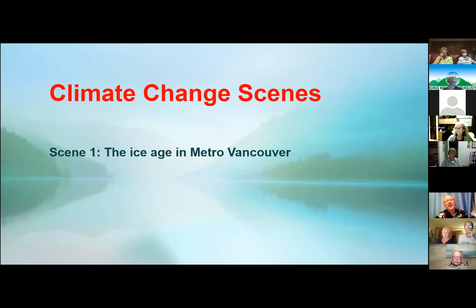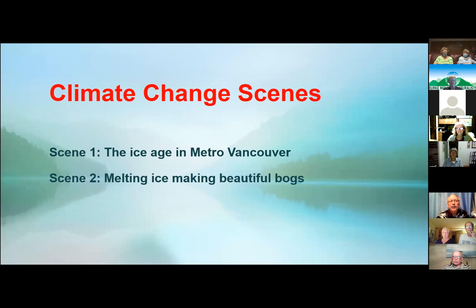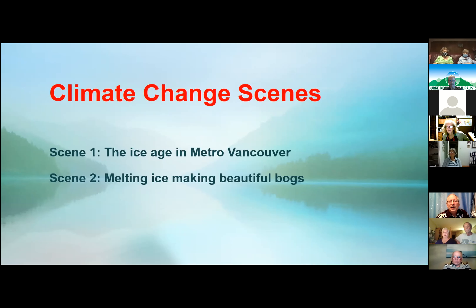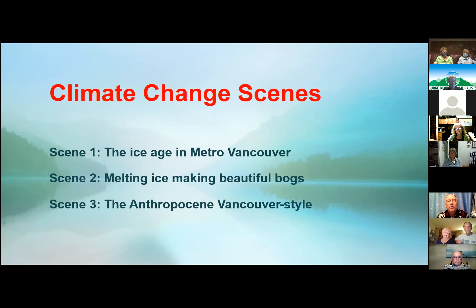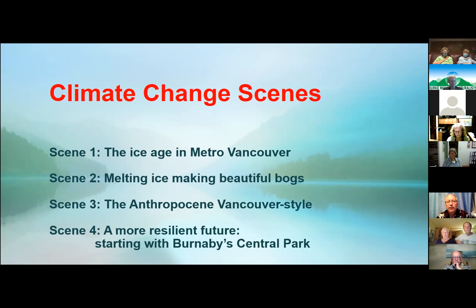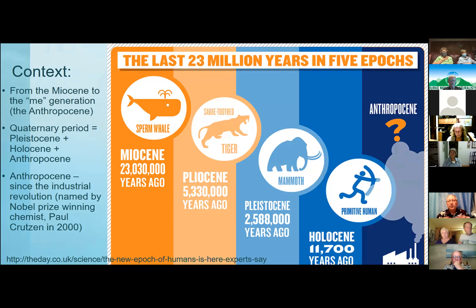I'm going to do this talk in four different scenes, in order by time. The first scene is the ice age we experienced here in Metro Vancouver a long time ago. Scene two is bogs — Victoria already mentioned that our forest has a bog in it, and I really love bogs. The third scene is the now — there's this thing called the Anthropocene period that we're in. And fourthly, talking about this excellent experience we've had working in Burnaby's Central Park.